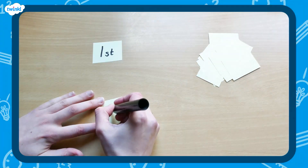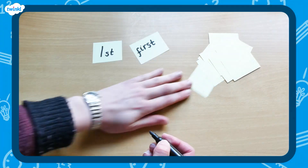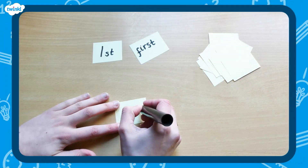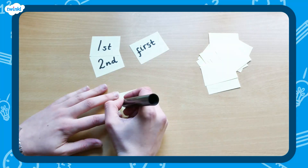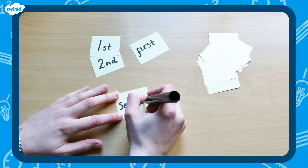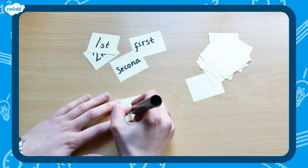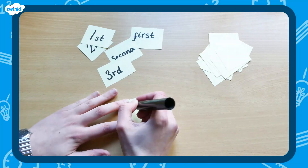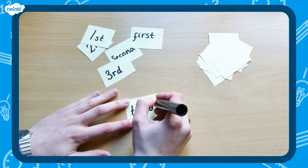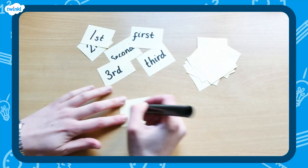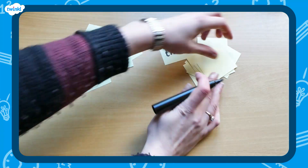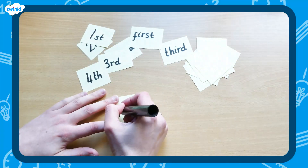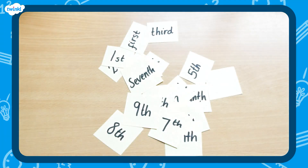First, create your own set of ordinal word cards and number cards like this, with 1st, 2nd, 3rd, 4th, 5th, 6th, 7th, 8th, 9th and 10th.